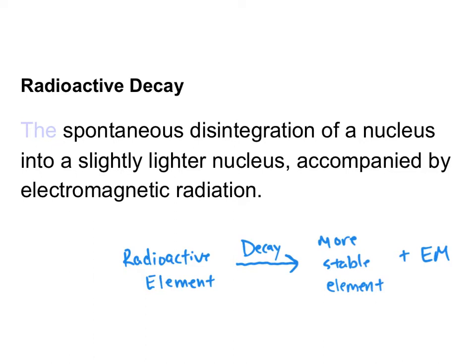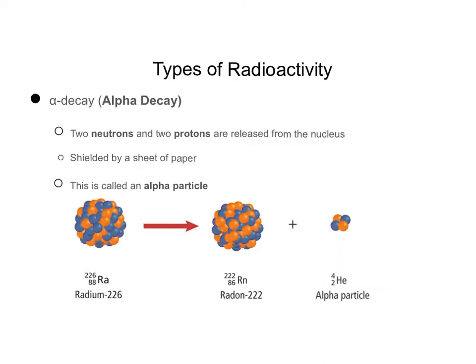The first type of radioactivity we'll look at is alpha decay. Note that alpha is a Greek symbol — it looks just like this if you were to hand-write it. Alpha decay is when two neutrons and two protons are released from the nucleus. This particle looks exactly like helium — it has a mass of four, two protons, and two neutrons, which means it also has a positive two charge.